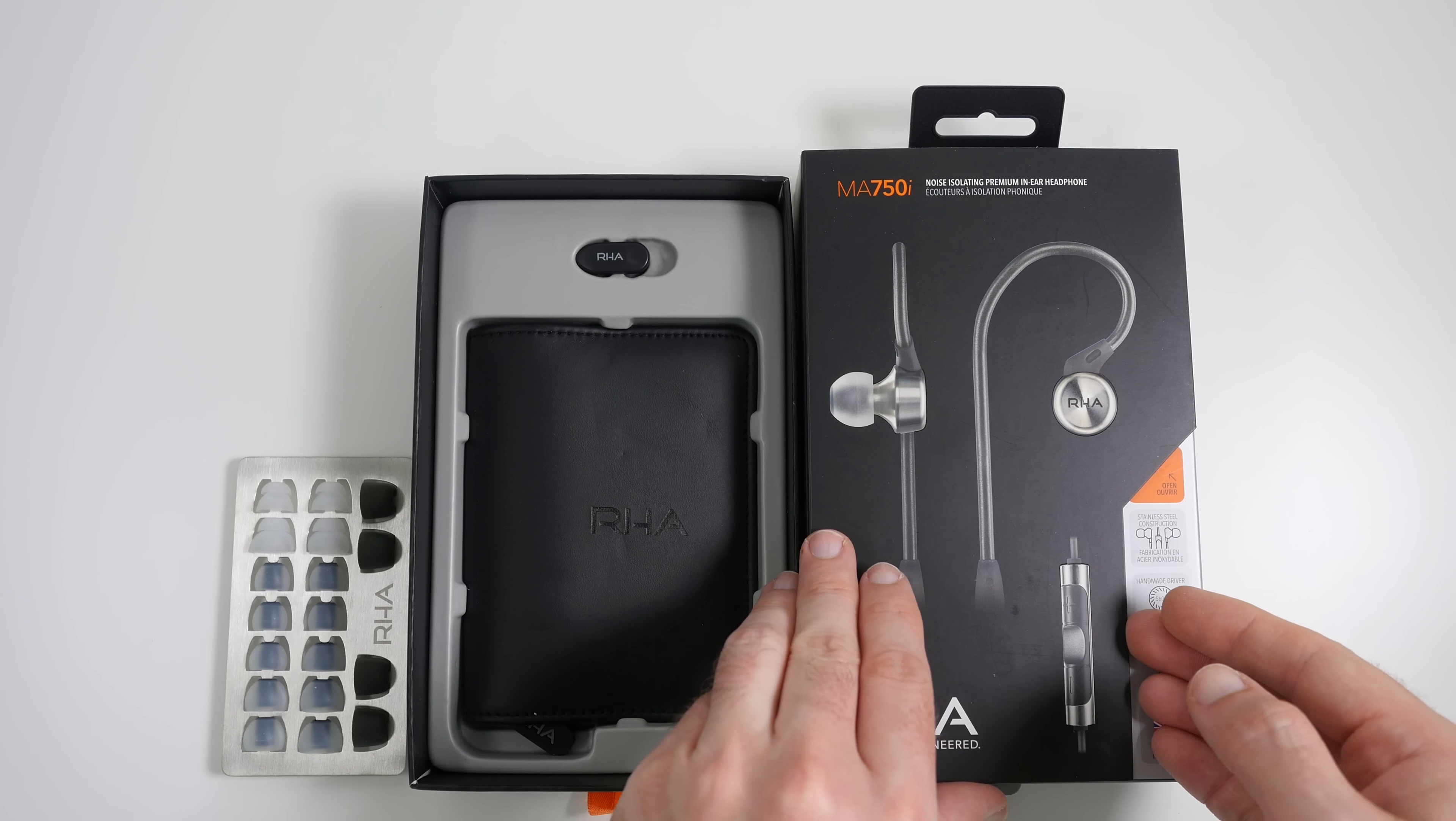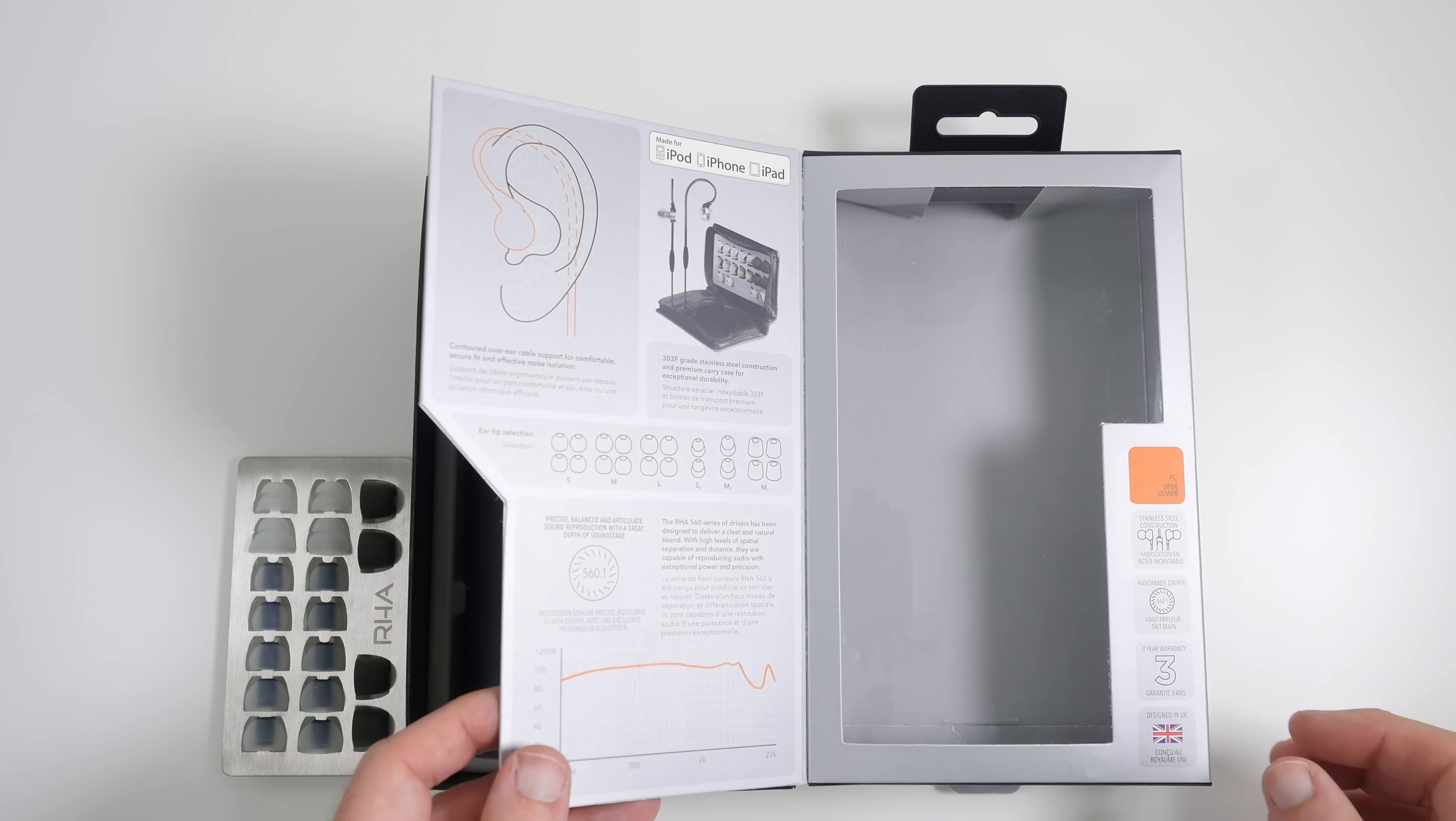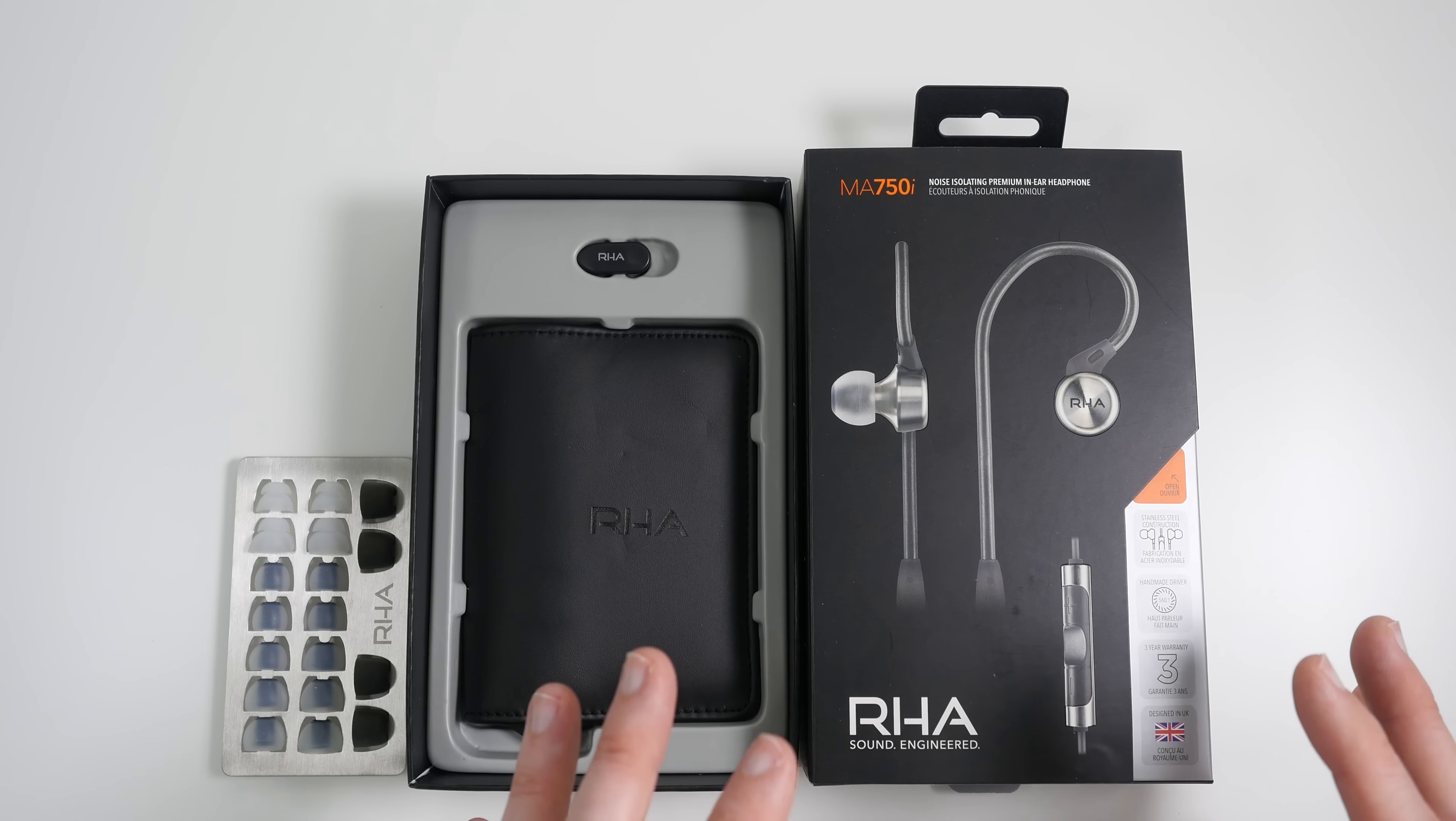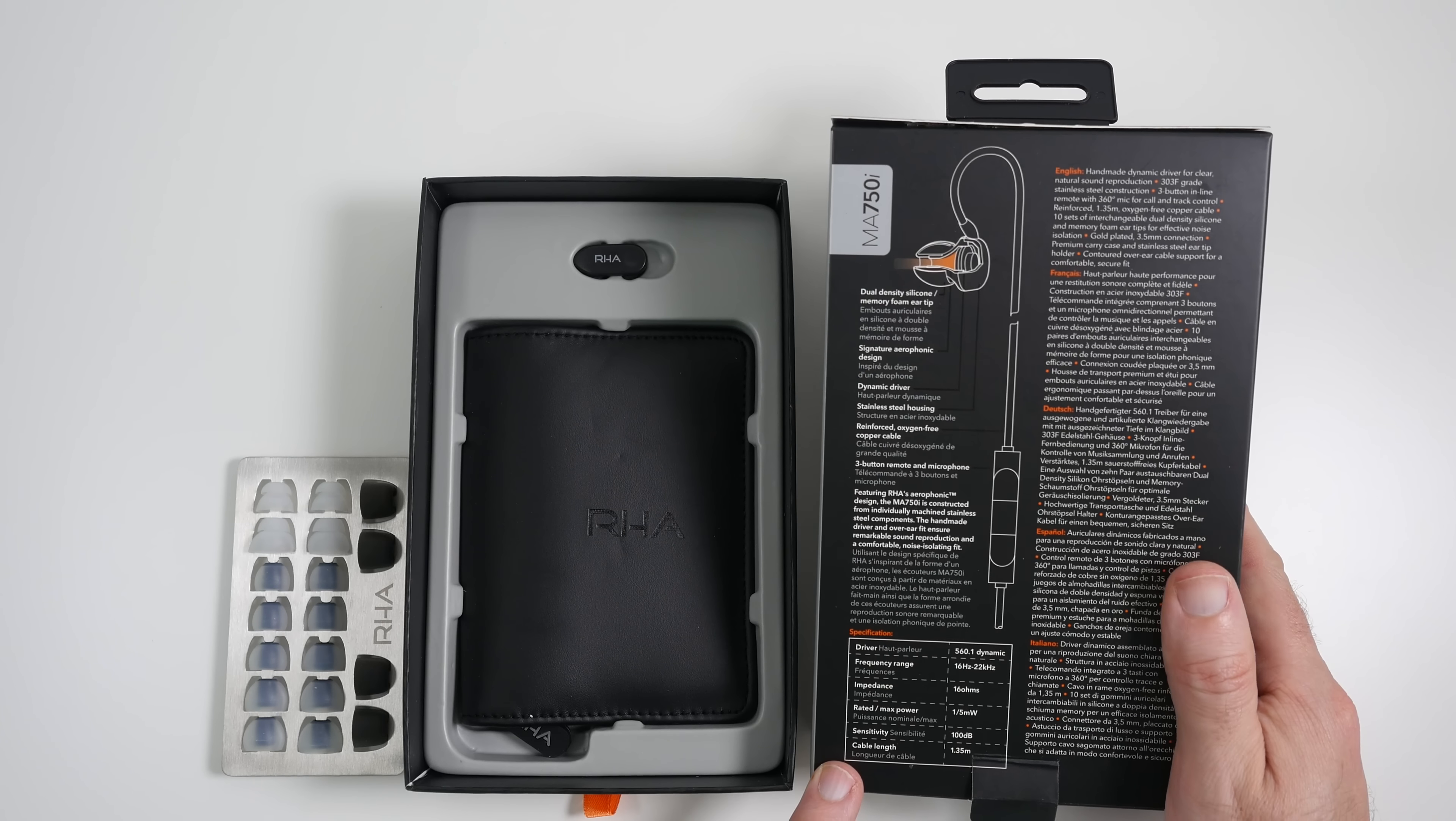This is the front of the box and then inside the box you can see the headphones are already removed, but you saw how beautifully presented they were. These are stainless steel construction headphones, you get a three-year warranty, they're designed in the UK as well, and around the back of the box we've got some of the specifications.